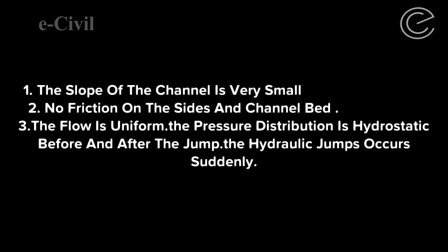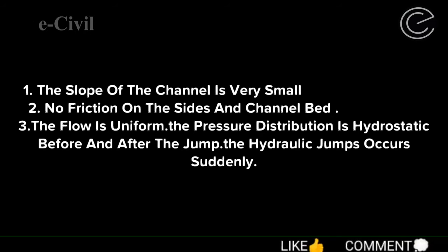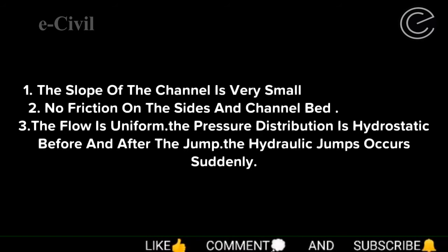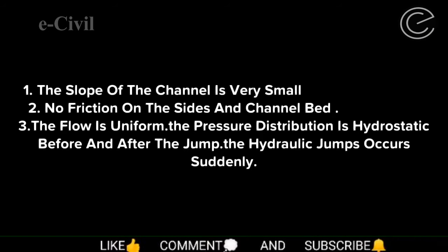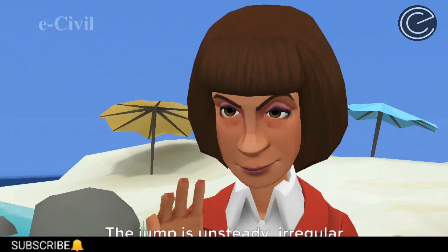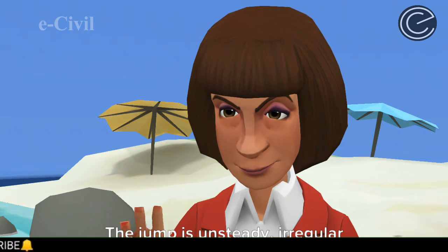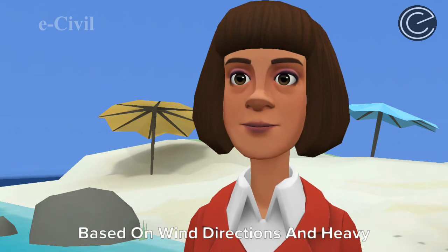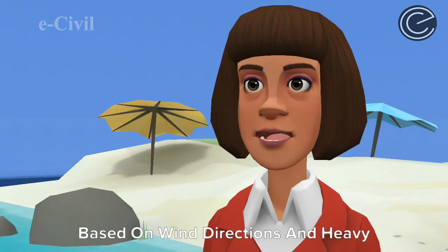Two: no friction on the sides and channel bed. Three: the flow is uniform. Four: the pressure distribution is hydrostatic before and after the jump. The hydraulic jump occurs suddenly. One: the jump is unsteady and irregular.